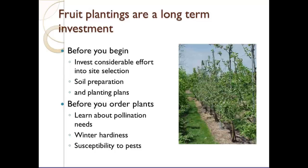Before ordering plants, you need to know the pollination needs. Some plants actually require another cultivar for pollination to occur. We'll talk about which plants require that and which can stand on their own. This is especially important in a small orchard, which tends to have more diversity in plants as opposed to a large orchard that has large blocks of the same tree.